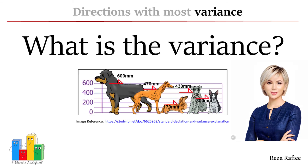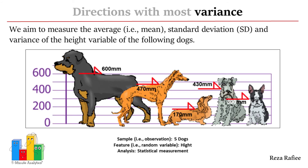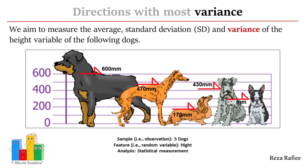Before we start learning about PCA, let's first understand what variance means using a simple example. Let's assume that we have measured the height of the following dogs in millimetres. We aim to do a simple analysis and calculate the average, standard deviation, and variance of the height variable within this small population of dogs.